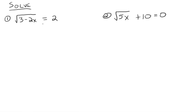Now we're going to talk about solving radical equations. Solve the square root of 3 minus 2x is equal to 2. We can do anything we want to an equation as long as we do it to both sides. The goal here is to get x out from being underneath the radical sign. That's why it's called a radical equation, because what you're trying to solve for is located underneath the radical sign.